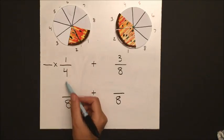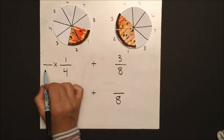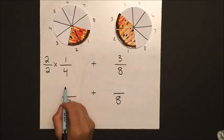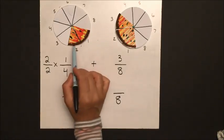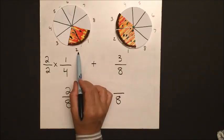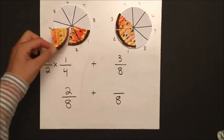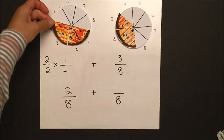So we ask ourselves, how did we get from four to eight? Well, we multiplied by two. And if we do that to the denominator, we have to do that to the numerator. So our numerator becomes two. Two out of eight slices is going to be equivalent to the one fourth that we started with.